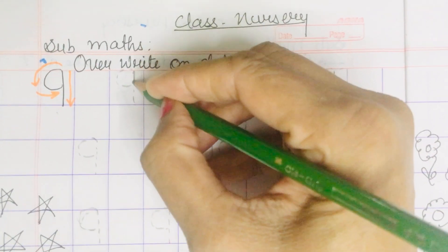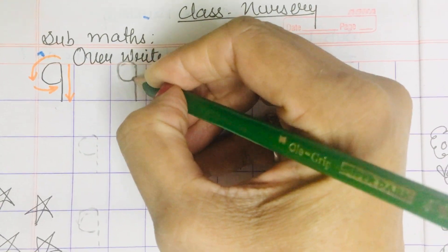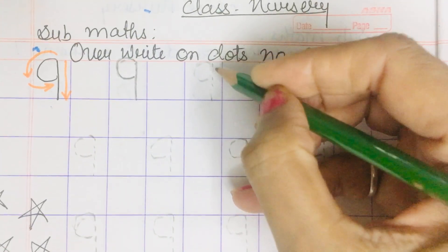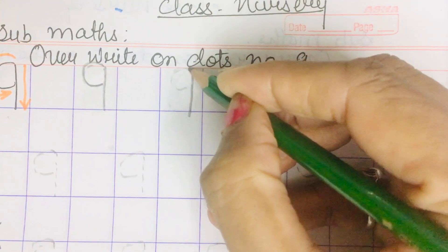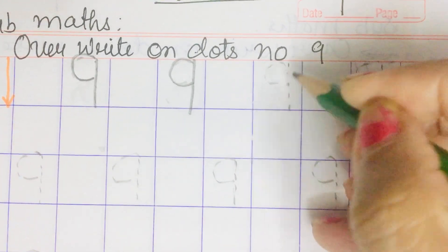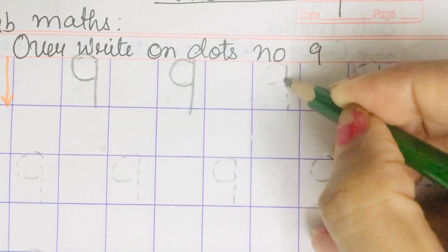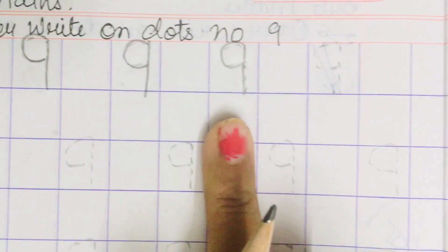First C, we will make a standing line. Then we will make C or half curve. Again, by joining the dots we will make a standing line and C or half curve. Again, standing line and C. This is number 9.